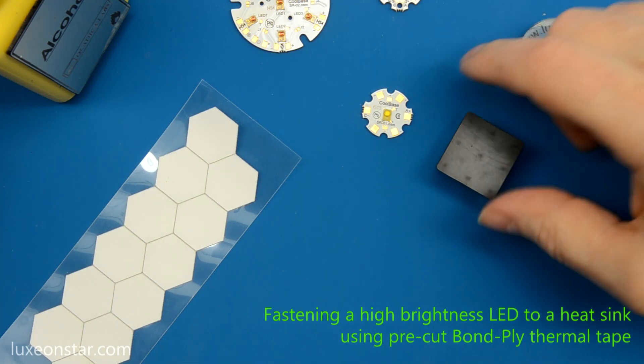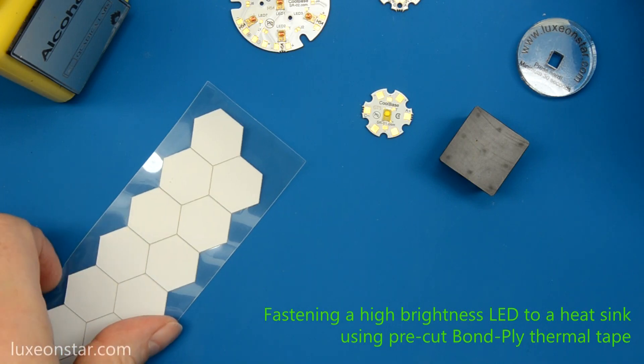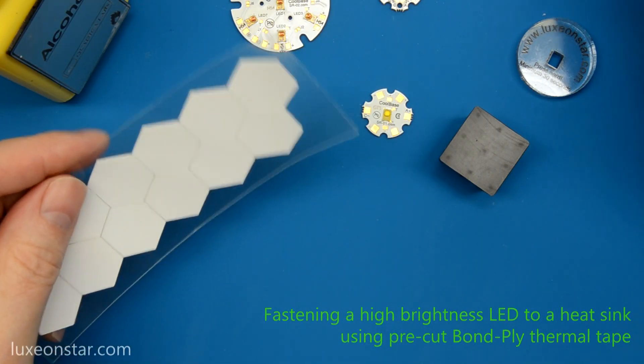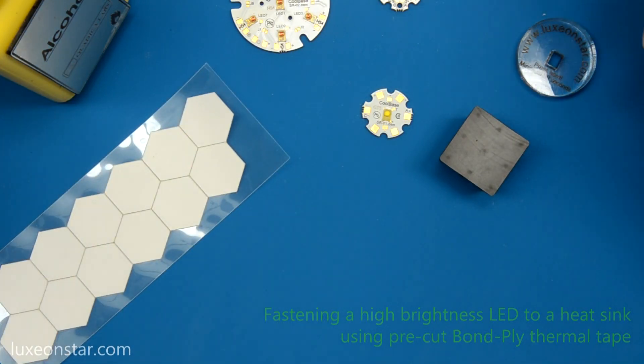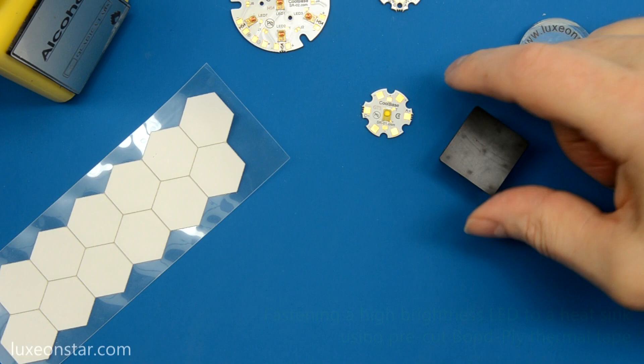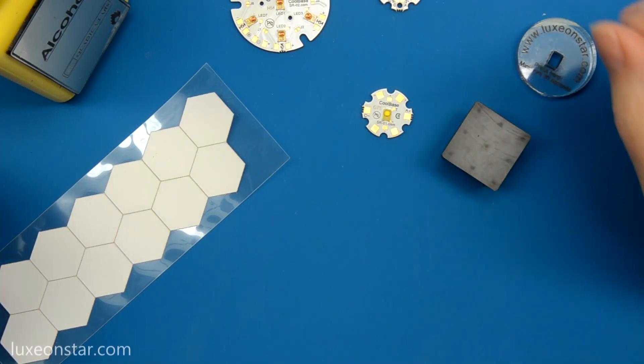One of the more popular options for fastening an LED to a heat sink is our pre-cut thermally conductive Bond Ply 100 tape. This fastening method offers a fast and simple way to create a highly efficient thermal bond between the LED assembly and the heat sink without the need for messy adhesives, grease, or any mechanical fasteners.